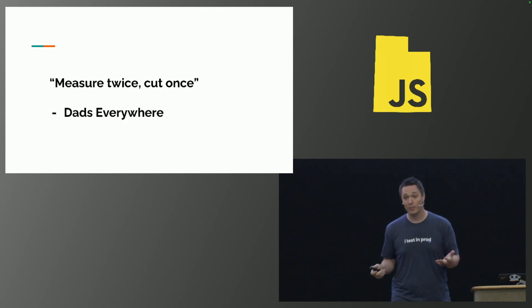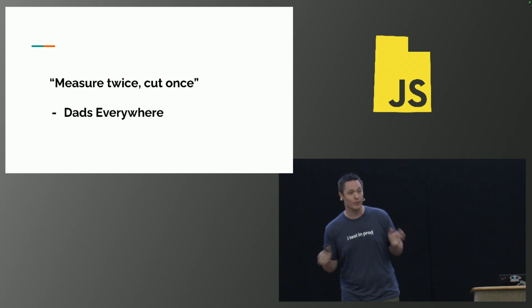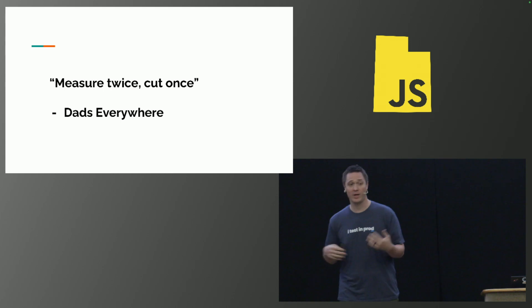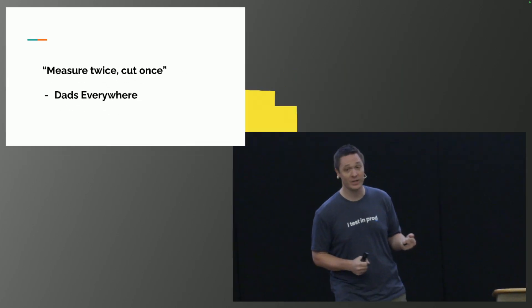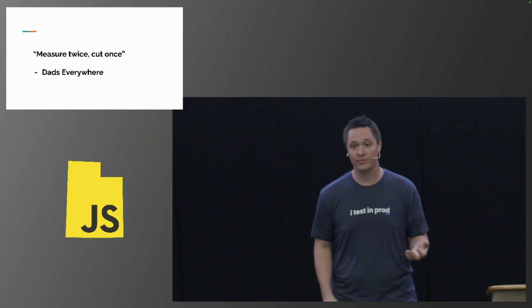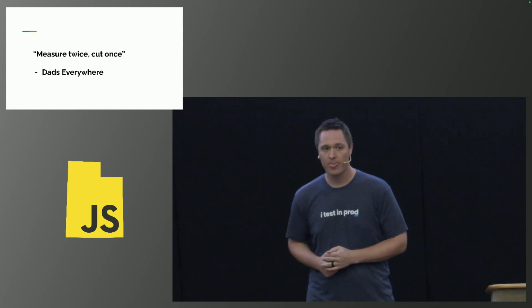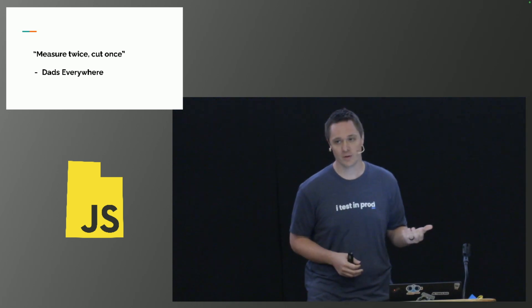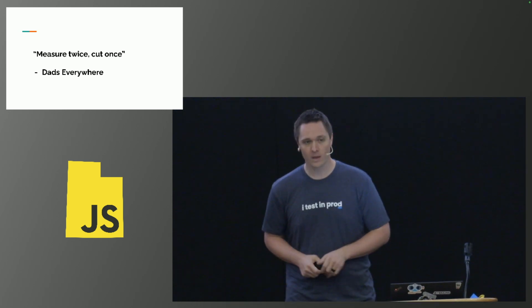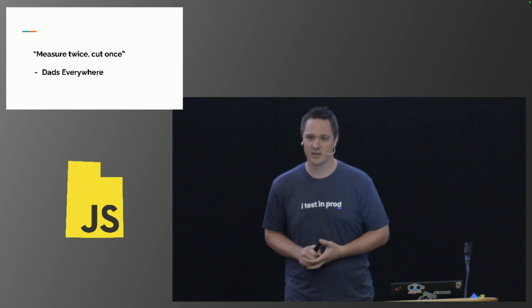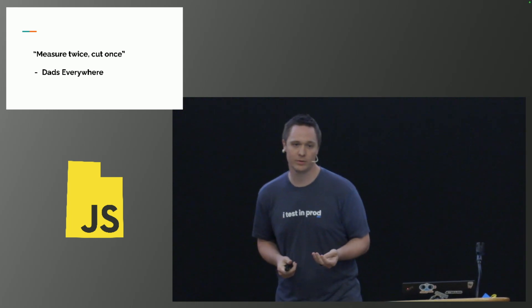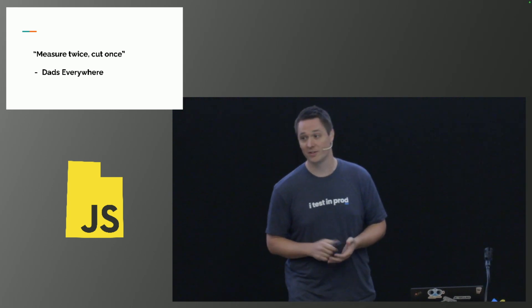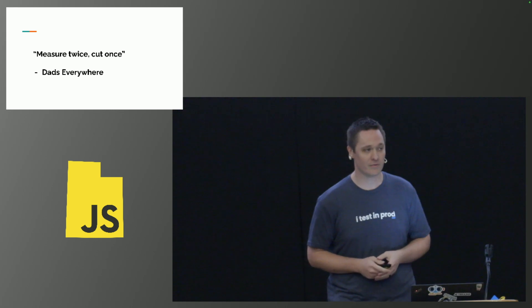As your dad probably told you, whenever you do any woodworking project, you always measure twice and cut once. And how this applies to computers is when we have performance that we need to change and we have things we want to fix — before we go and just fix them, we need to measure. For example, if you were running a big heavy workload on your computer and you said you should probably optimize this, but you really had no idea if you needed to, you might be wasting your time. But if you see the CPU start to spike at 100% and things start to get really slow, then you say, OK, I have an issue, I need to fix it.